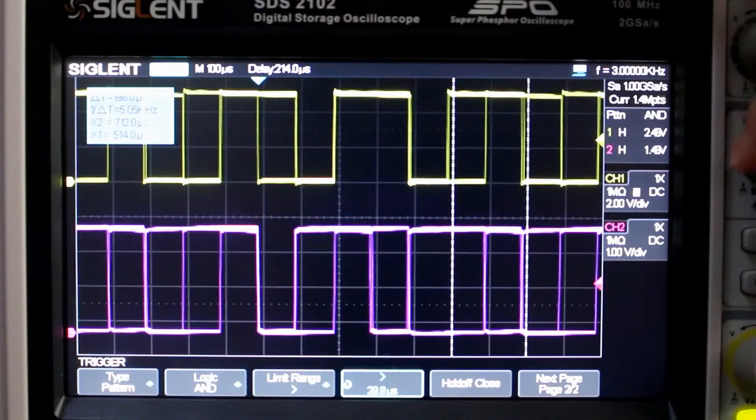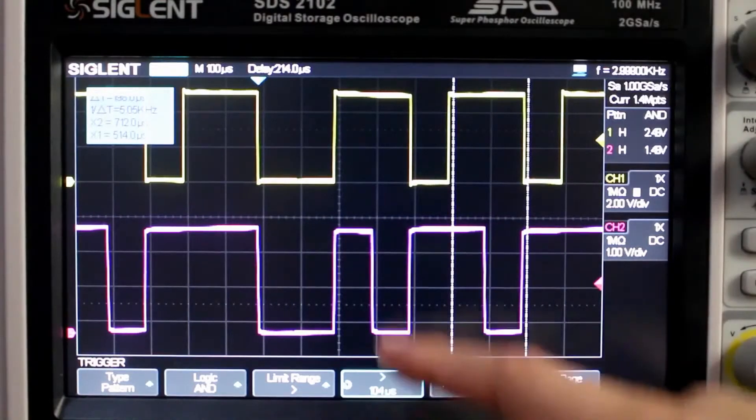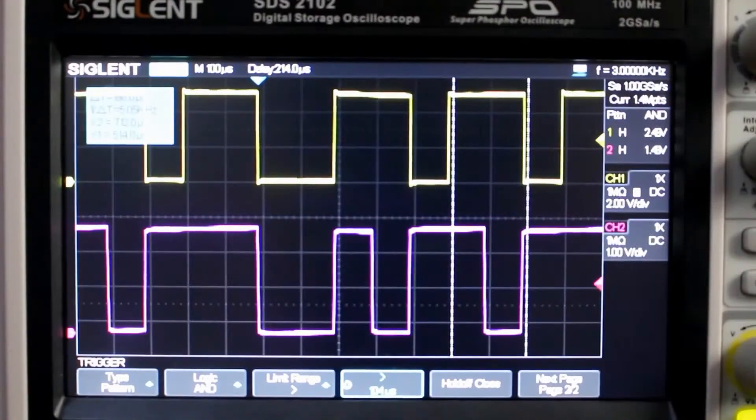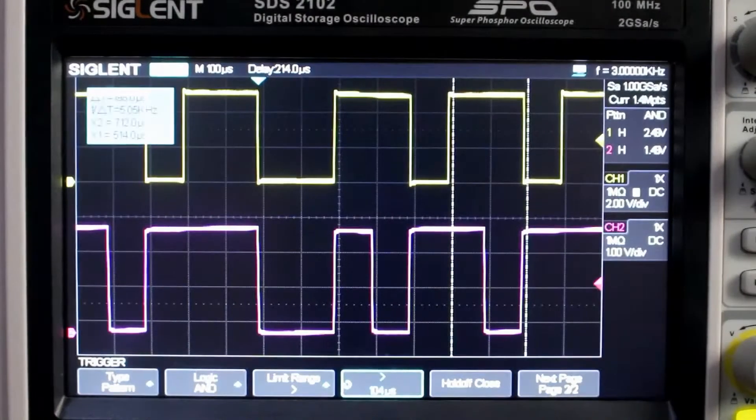Slowly getting there. Almost there. Okay, and now you can see we are triggered right at the wider one. So there you have it, that's the pattern trigger type. We triggered right where we wanted to.